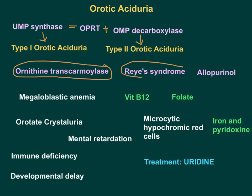Reye's syndrome is another cause — in this syndrome there will be damage to the mitochondrial membrane, causing urea cycle carbamyl phosphate to leak out into the cytoplasm, giving rise to accumulation of orotic acid as carbamyl phosphate enters pyrimidine biosynthesis. Additionally, allopurinol as a side effect can give rise to orotic aciduria because allopurinol competes with orotic acid for orotate phosphoribosyltransferase enzyme; as a result, orotic acid accumulates.